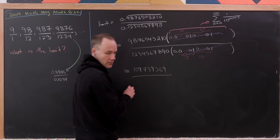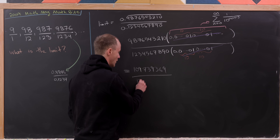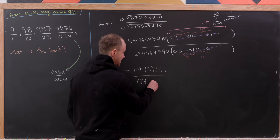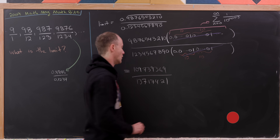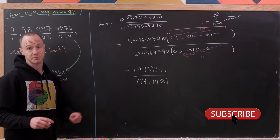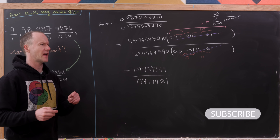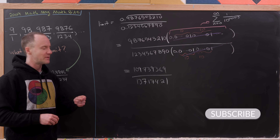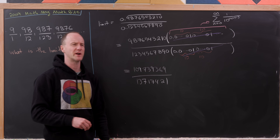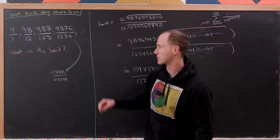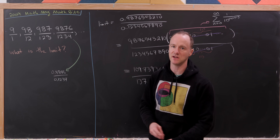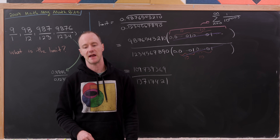This expression can be reduced because the numerator and denominator have common factors. It reduces to 109739369 over 13717421. This is not really a beautiful limit, so what we really want to do is find some other interpretation where the limit is nicer — and that's exactly what's done in the article. So let's look at that now.